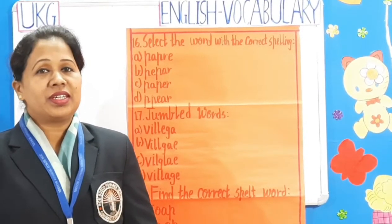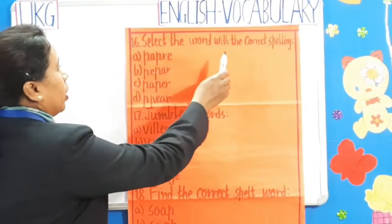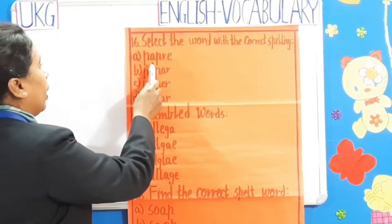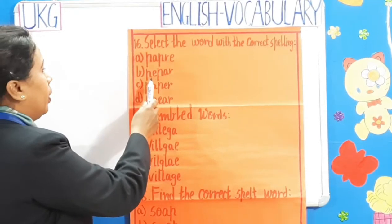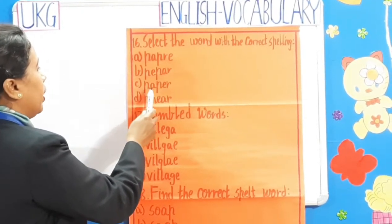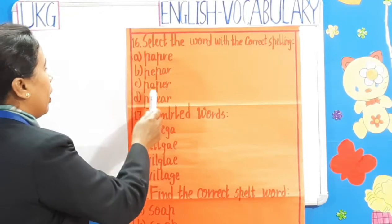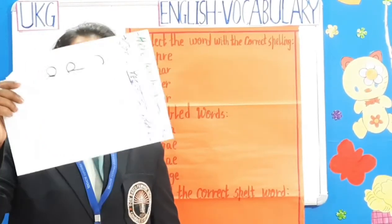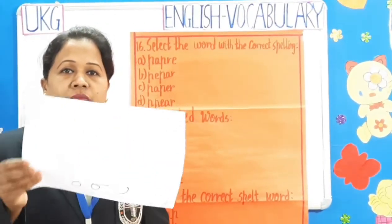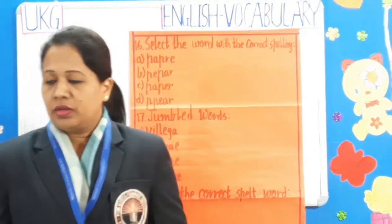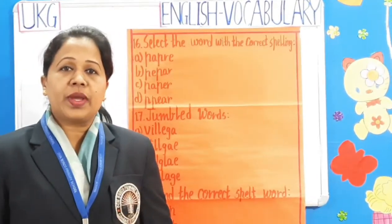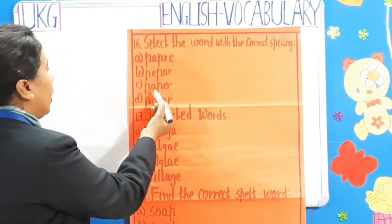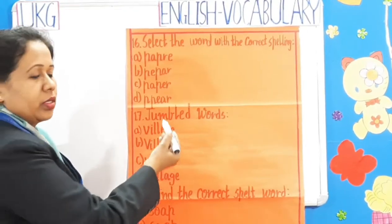Question number 16: Select the word with the correct spelling. Options are given — A: P-A-P-R-E, B: P-E-P-A-R, C: P-A-P-E-R, D: P-P-E-A-R. So children, what is this? Yes, it is a paper. So, we have to find out the correct spelling of paper. Number C — P-A-P-E-R — is the correct answer.